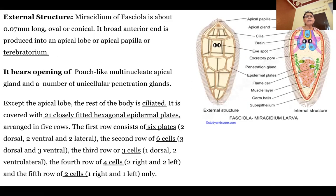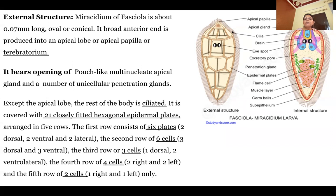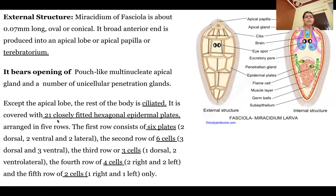Miracidium comes into the water. If we talk about its external structure, the body is long, oval and conical with a broad anterior end which is the apical papilla, also called the terebratorium. There are pouch-like multinucleate apical glands present, and a unicellular penetration gland is also present with the apical gland. The rest of the body is ciliated, and there are 21 closely fitted hexagonal epidermal plates in 5 rows. In the first row there are 6 plates — 2 dorsal, 2 ventral and 2 lateral. In the second row there are 6 cells — 3 dorsal and 3 ventral.